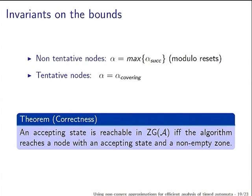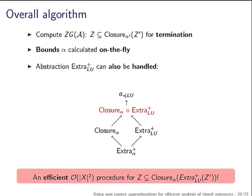Finally, you will have a tree in which the bound function of a node is bigger than that of its children, and the bound function of a tentative node equals that of the covering node. The theorem is that this procedure is correct. Overall: you compute your zone graph, use efficient closure inclusion tests for termination, and get additional gain by calculating bound functions on the fly. We also managed to compose the closure abstraction with the other convex abstraction to get one that subsumes both, and we could still come up with an efficient test for this composed abstraction.